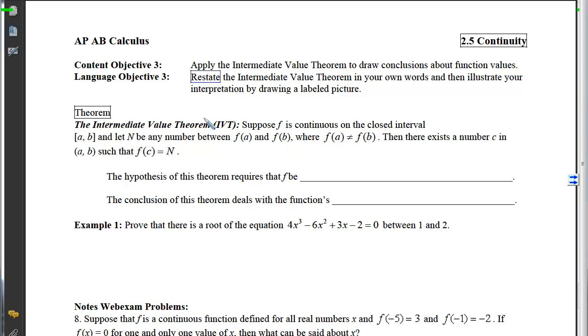Once I've chosen that n, then there must be a number c in the open interval from a to b such that the output associated with c, or the y-coordinate that goes with c, is equal to that number you chose.